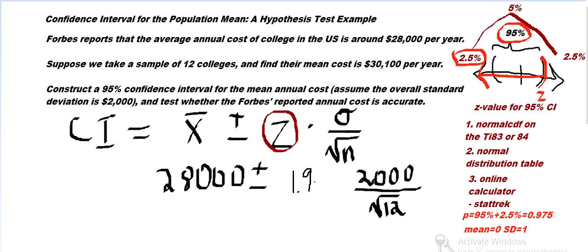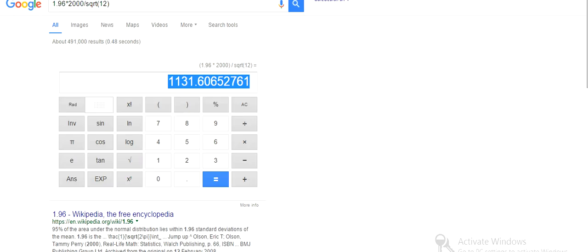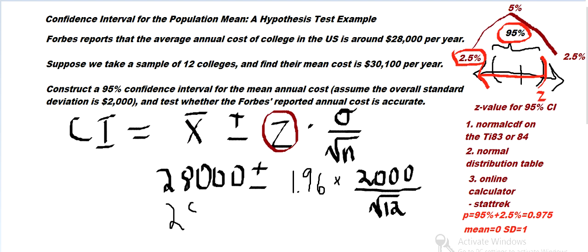So that's 1.96. And that's a common, you might almost memorize that, because that's common for the 95% confidence interval. So we want to calculate $28,000 plus or minus 1.96 times 2,000 over square root of 12. Let me pop this in the calculator.